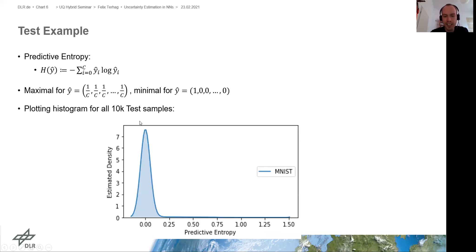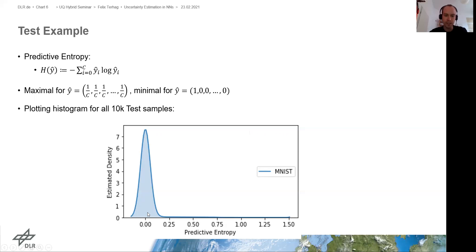Now we can plot this for our whole test set, and we can see that it is very much concentrated at zero, which is the lowest value. This is not a proper histogram — it's a kernel density estimate — but if we had a proper histogram, which I have in the appendix, it is even more extreme: in the first bin, from zero to 0.02, almost all of the samples lie.